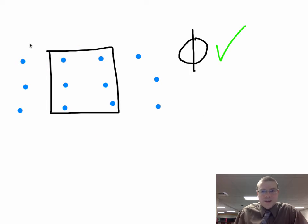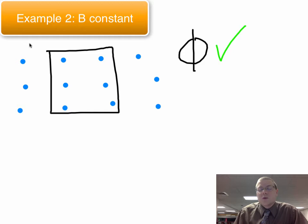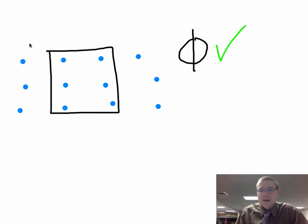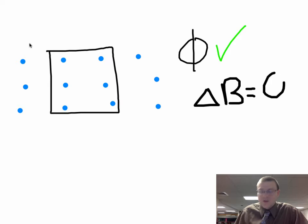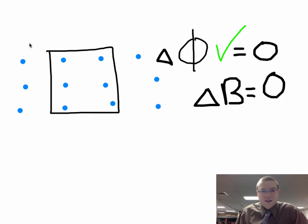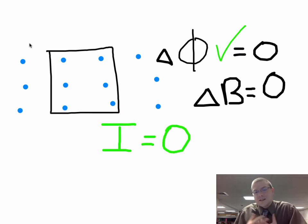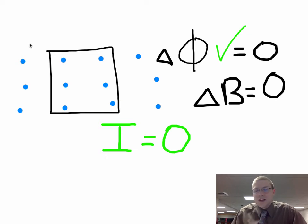Now let's try another scenario where the flux stays the same. We have a magnetic field passing through an area — so yes, we have flux. But is that flux changing? In this case the magnetic field is constant, so there is no change in magnetic flux. If there's no change in magnetic flux, the induced current equals zero. There is no current because the loop is used to the magnetic field it has right now. It doesn't need to increase or decrease the flux — it's happy with the flux it has.